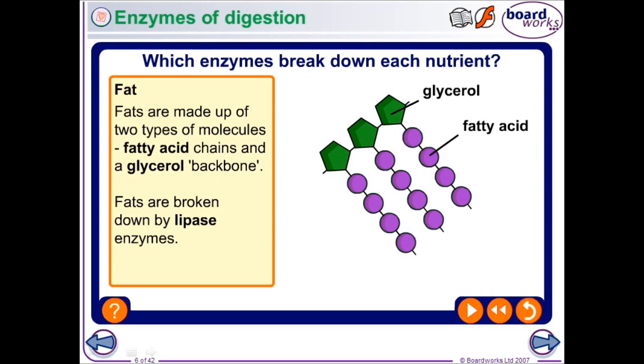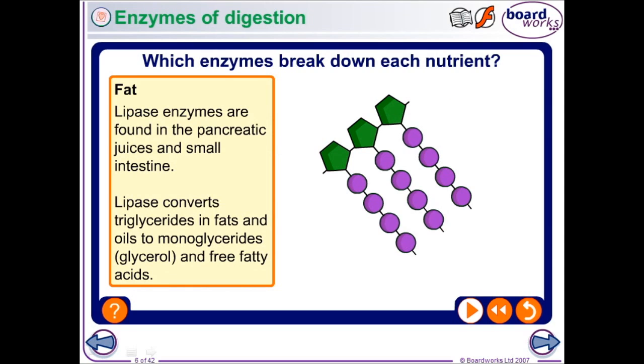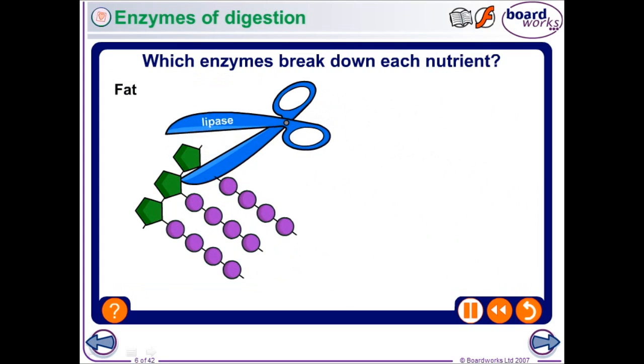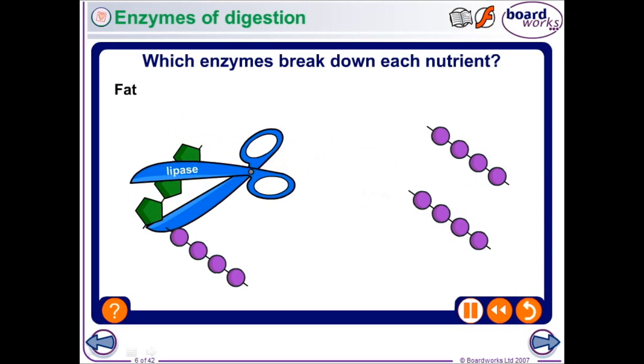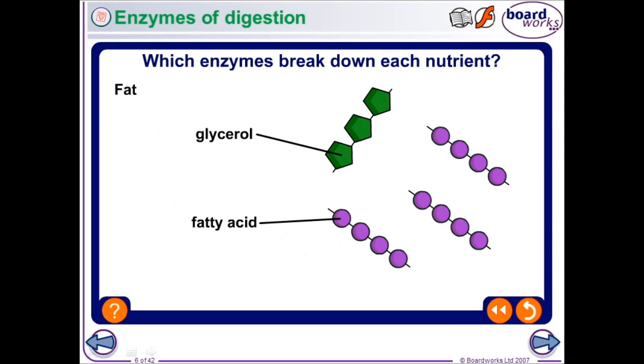And thirdly we have fat molecules. Now fat molecules are made up of two different types of molecules. The fatty acid chains and the glycerol molecule. Now the family of enzymes which break down fats are called lipases. The lipase enzymes help break down the fats into the fatty acid chains and the glycerol molecule. All of these molecules are small enough to get across the small intestine wall and into our blood supply.